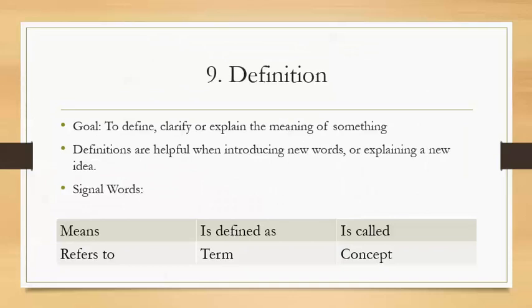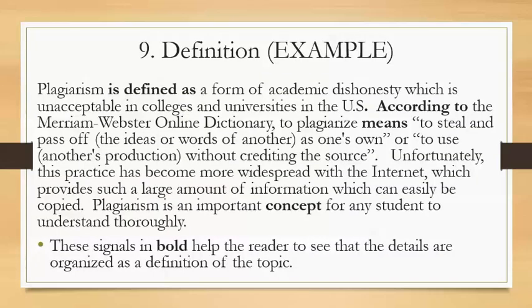Last but not least, number nine: definition. The goal is to define, clarify, or explain the meaning of something. This structure might not be used for a whole paragraph — sometimes it's just one or two sentences to define a word. It's helpful to introduce new words or explain a whole new idea; when explaining a big idea, you might find a whole definition paragraph. Signal words are: means, is defined as, is called, refers to, term, and concept. Pause the video to read the last example and see keywords like is defined as, concept, and means.